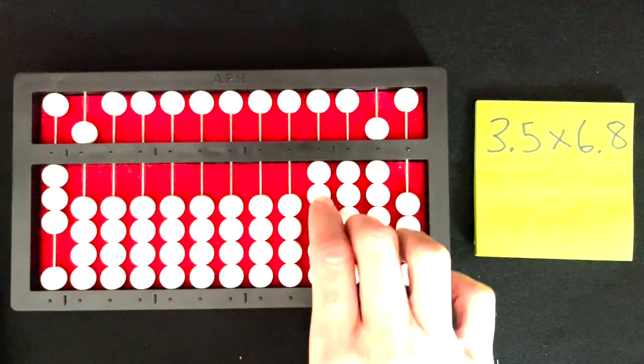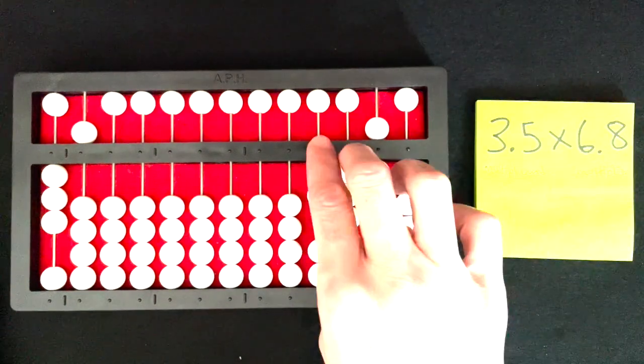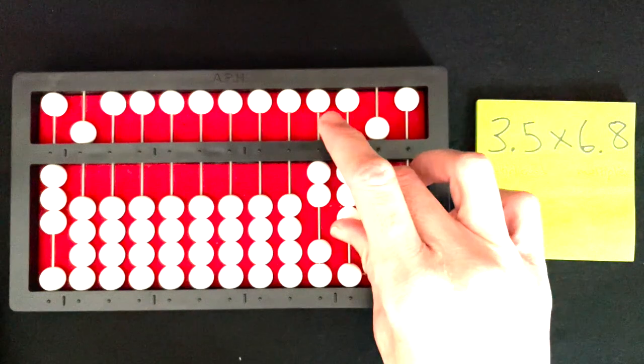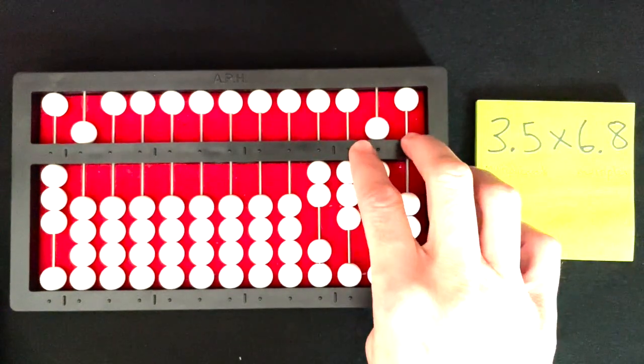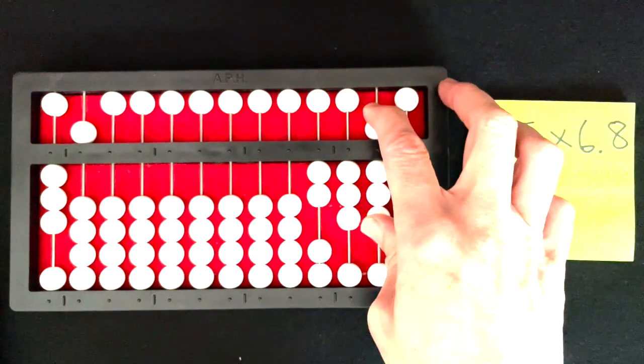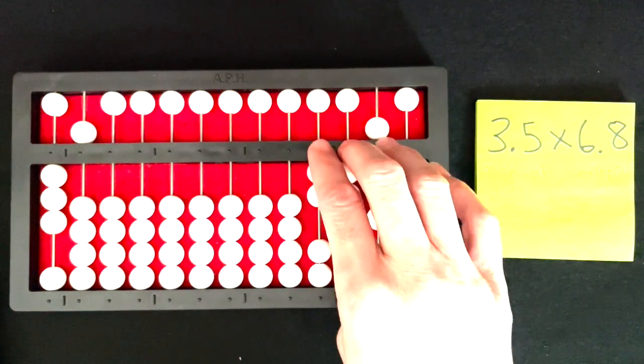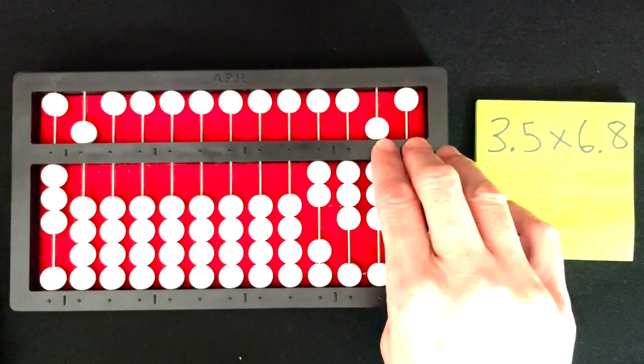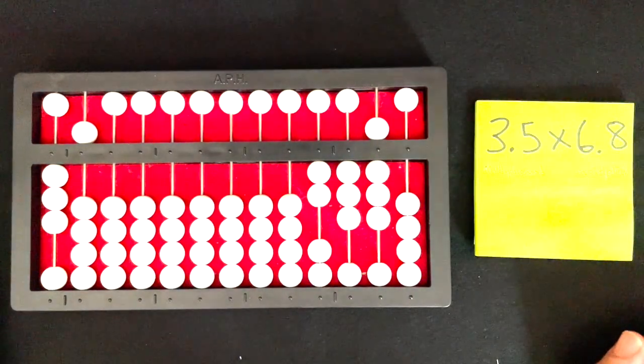I have two more numbers here, and these rods are going to represent my whole numbers. So that is 23, and then there's a decimal point here, an imaginary one, point 80. And so my answer here, my product, is 23.80 or 23.8.